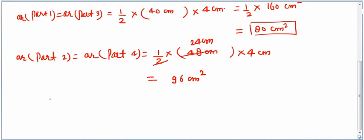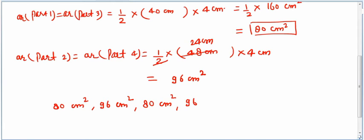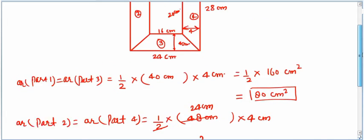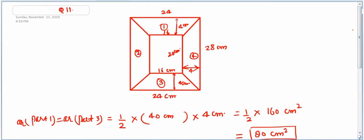The areas of the four sections are: 80 square centimeters, 96 square centimeters, 80 square centimeters, and 96 square centimeters. This was the most important question of this exercise. Exercise 11.2 is now finished and we are going to start Exercise 11.3.